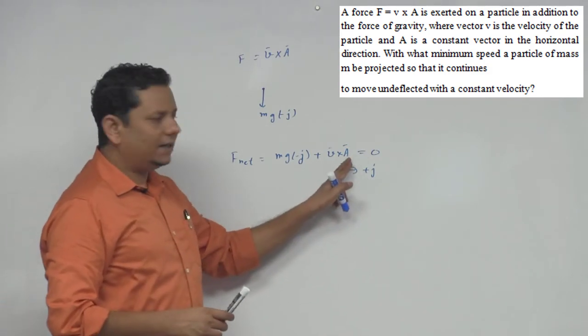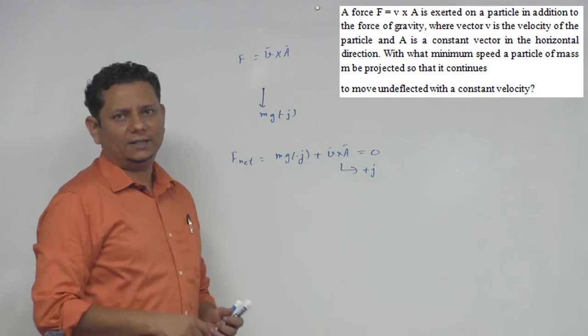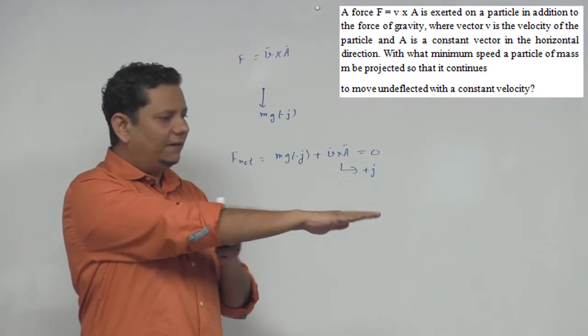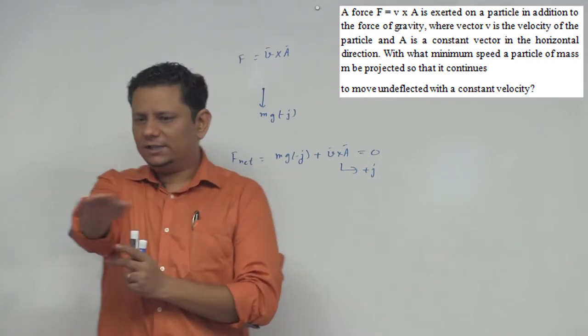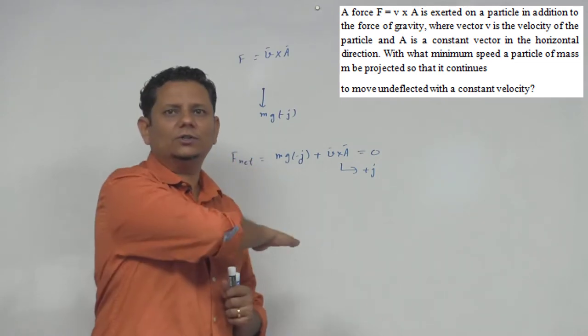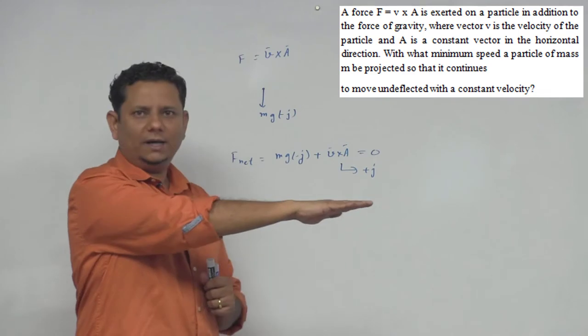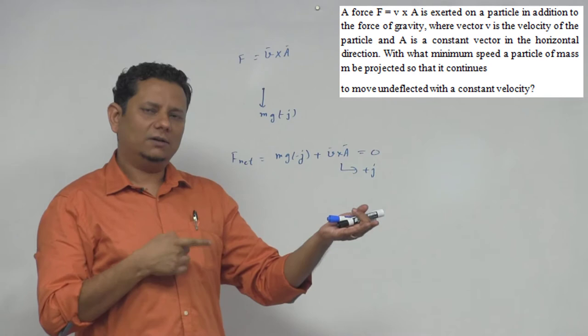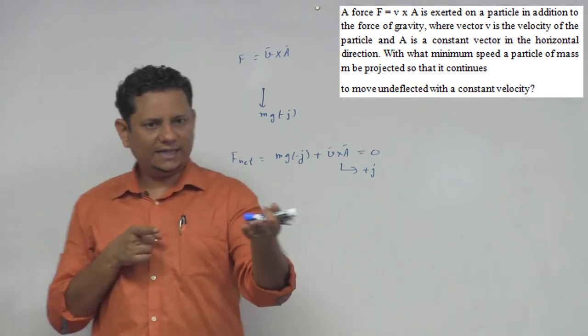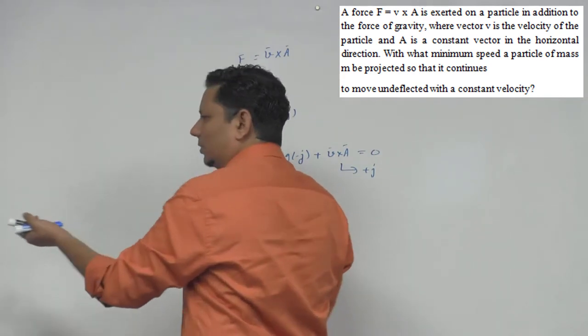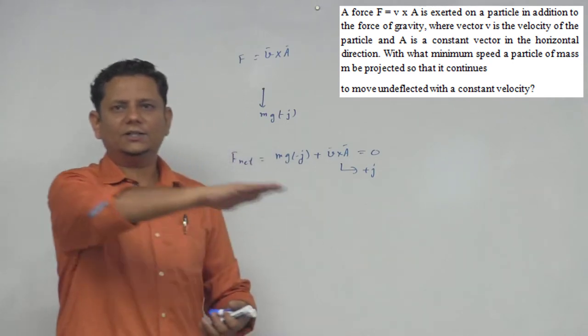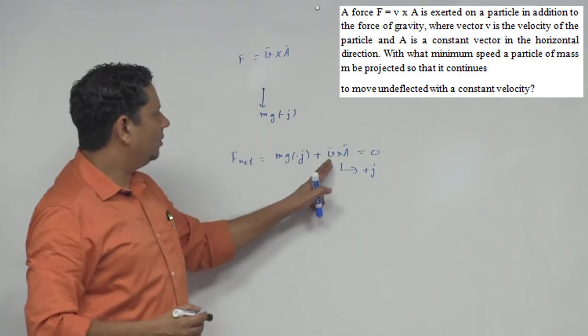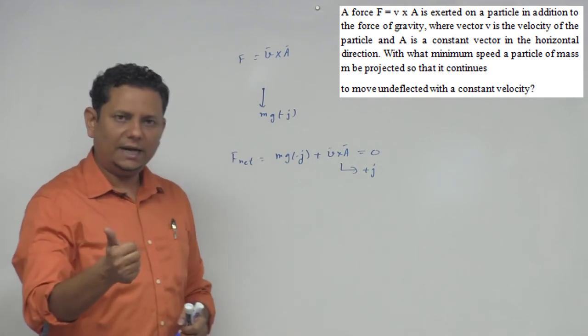Now in the J direction, V cross A where A is a horizontal direction. Students often get confused here - horizontal direction means the entire horizontal plane. If I shoot a gun, if I shoot a bullet like this, this whole direction is the horizontal direction.